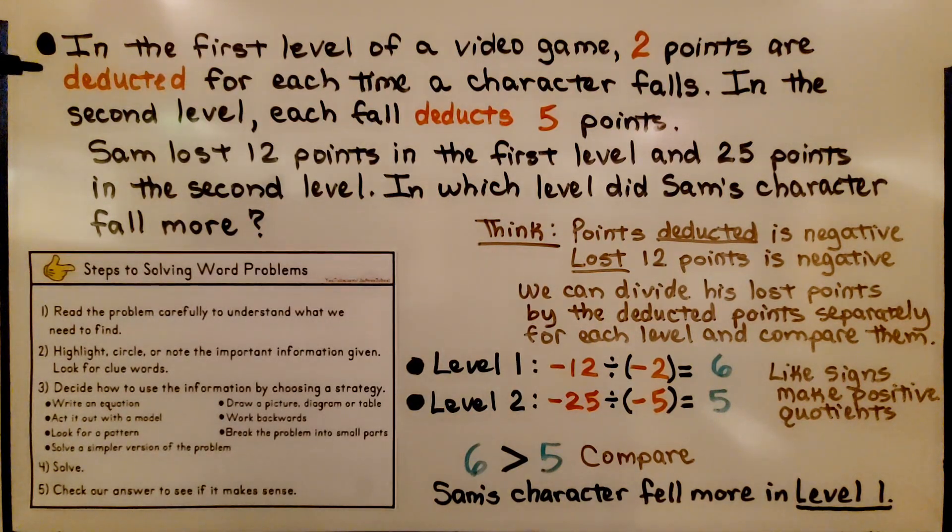This word problem says: in the first level of a video game, two points are deducted for each time a character falls. In the second level, each fall deducts five points. Sam lost 12 points in the first level and 25 points in the second level. In which level did Sam's character fall more?